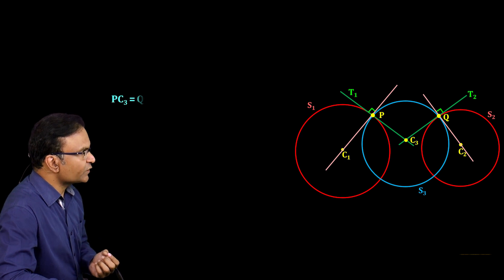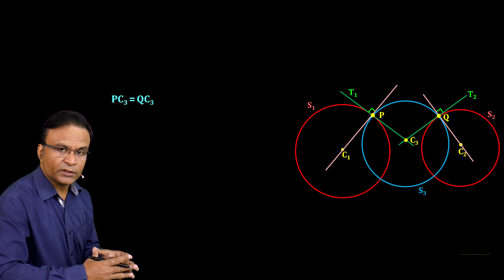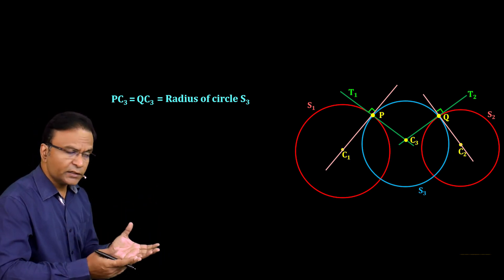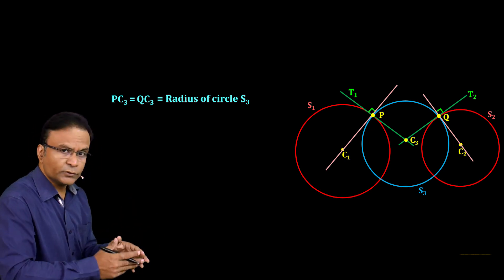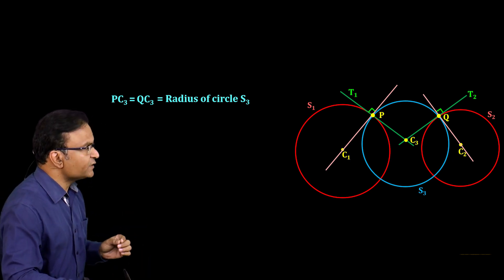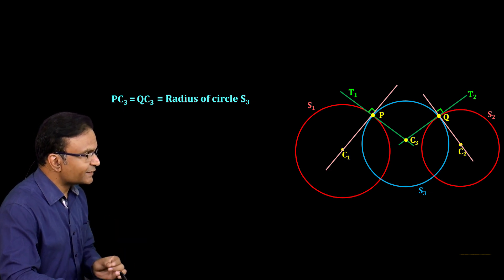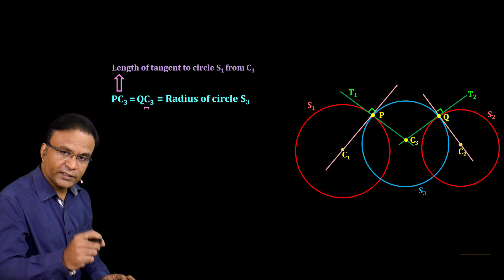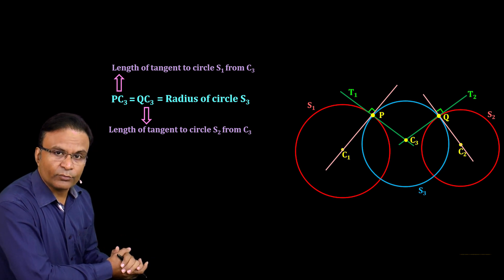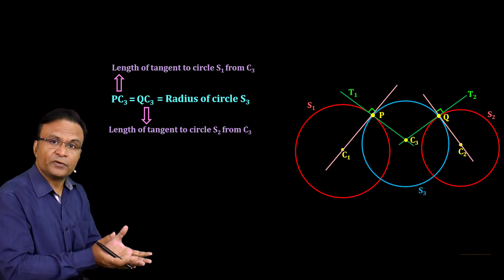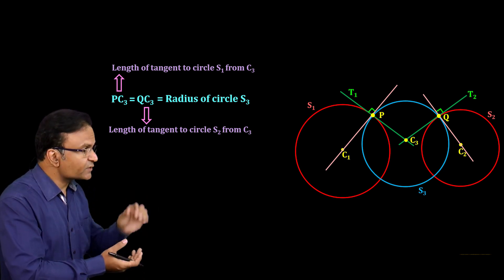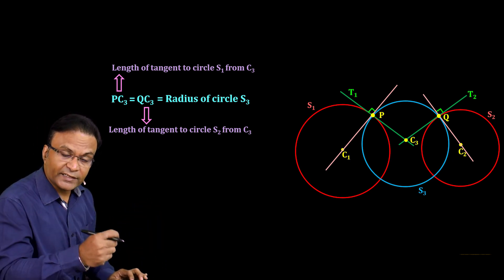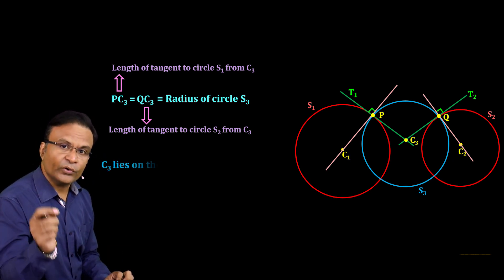From the figure, PC3 equals QC3 because PC3 and QC3 are radii of circle S3. Also, PC3 and QC3 are the lengths of tangents from point C3 to circles S1 and S2 respectively. So the two lengths of tangents from point C3 to circles S1 and S2 are equal.